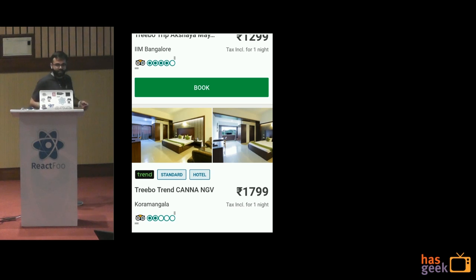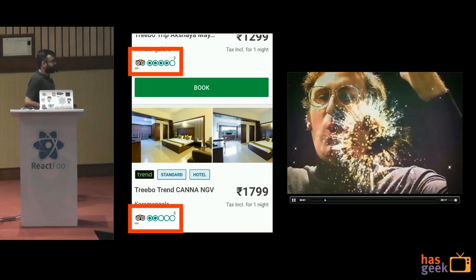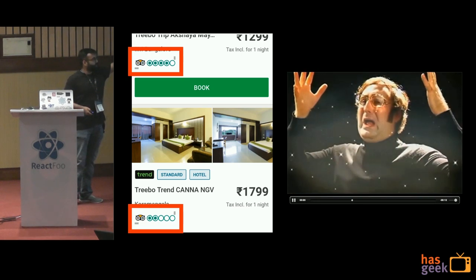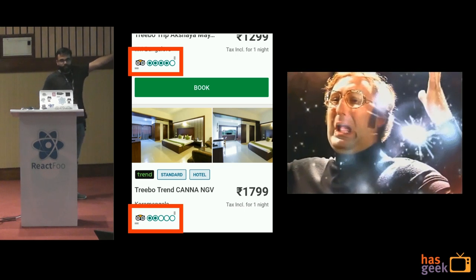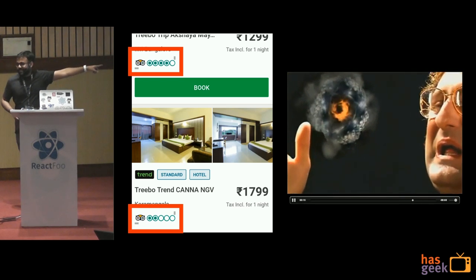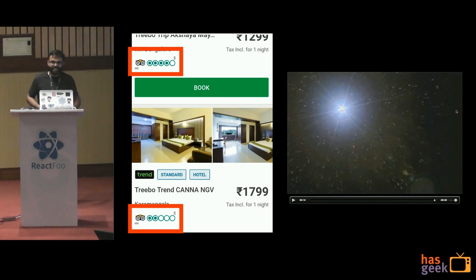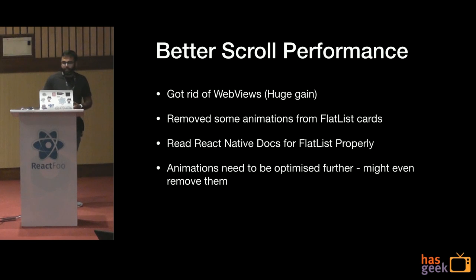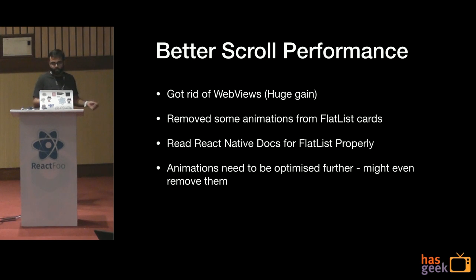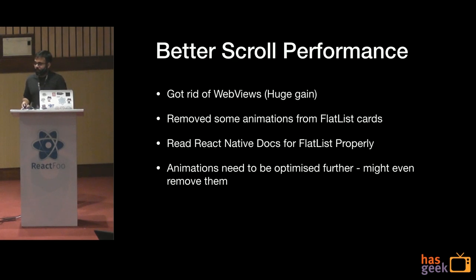WebViews rendering SVGs — let that sink in. This is probably the most embarrassing thing we ever did. Those scroll bars you see on that component — those are SVGs inside WebViews. On Android you can't even get rid of those scroll bars; it's probably still an open issue. For better scroll performance, we got rid of the WebView-based SVGs and now use PNGs. We simplified the flat list cards, removed extra animations, and added simple optimizations to flat list that are clearly mentioned in React Native documentation. We still haven't done enough with gesture animations and might just remove them for an easier-to-implement UI.